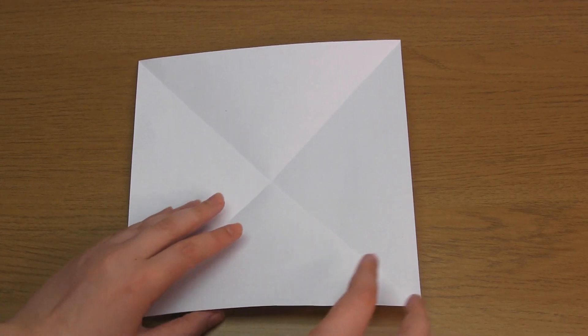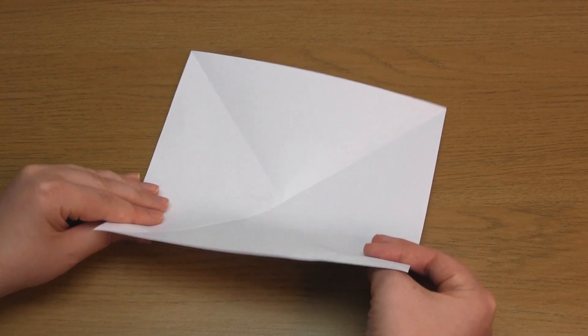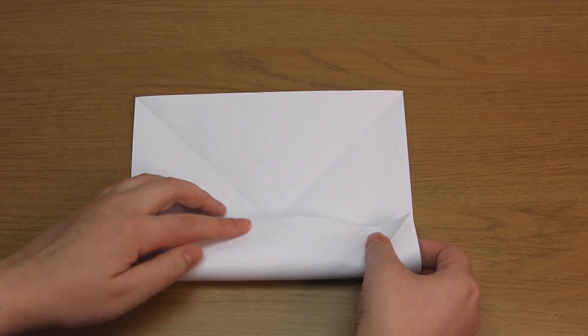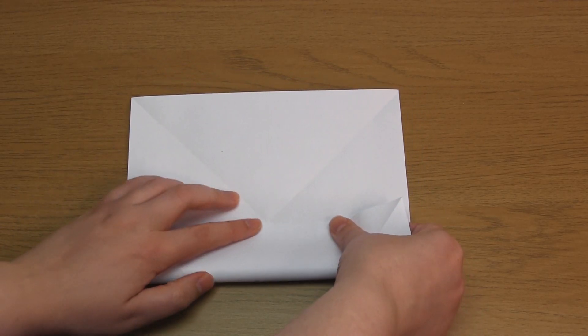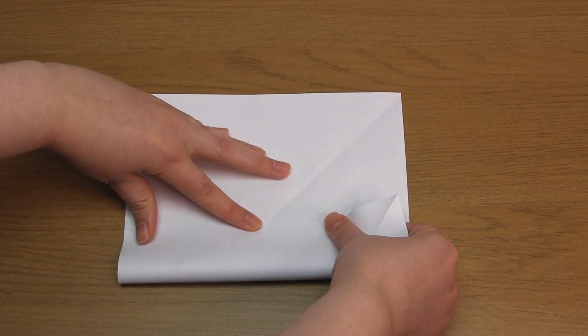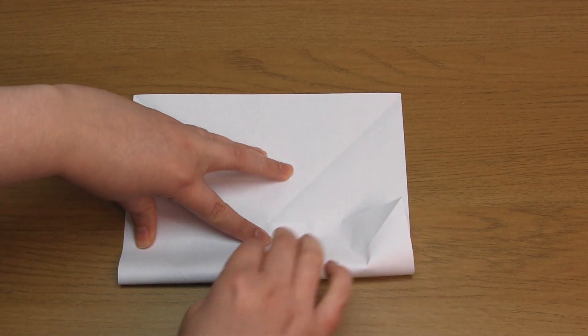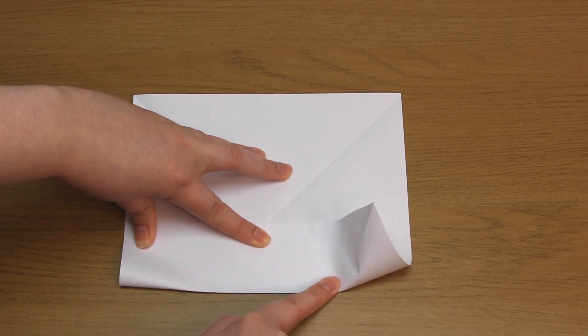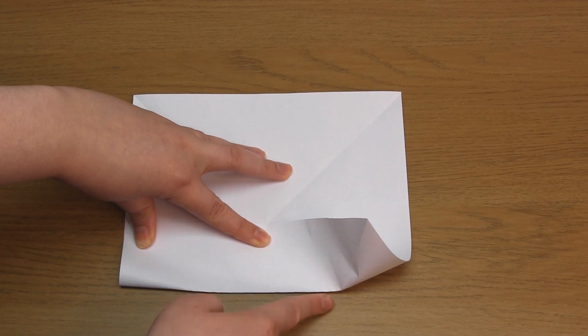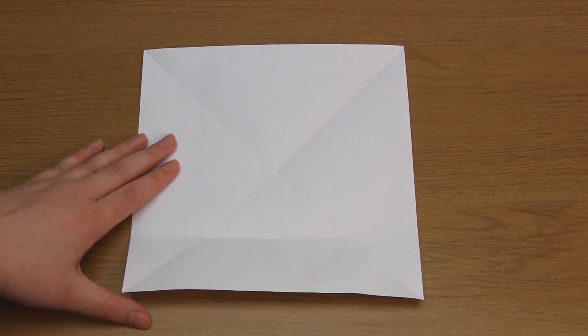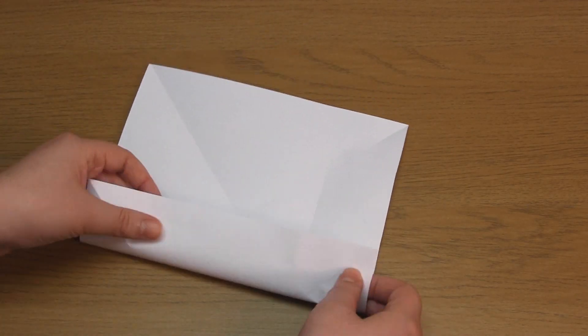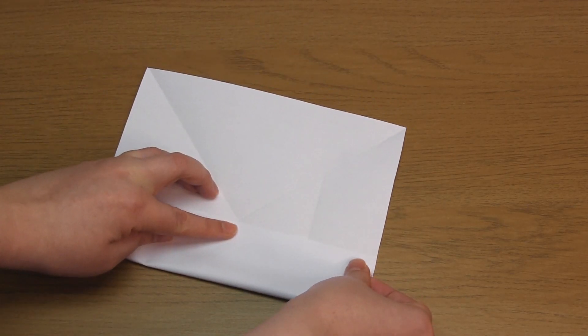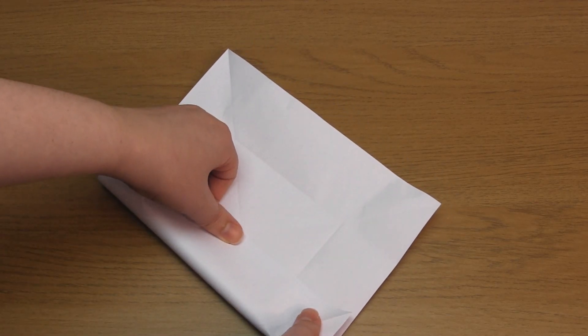Right, so take the bottom edge and fold it upwards so it lines up with the center where the diagonal folds cross. Also make sure the side edges line up. Note that you only want to press down on this fold between the diagonal folds. So fold over the bottom edge and line it up with the center. Only press down on the fold between the diagonals.